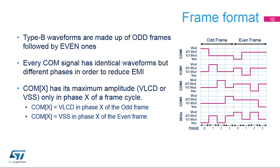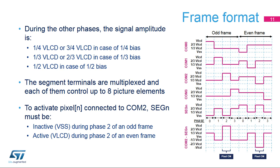The LCD controller generates a type B frame format which maintains 0 volts DC over the two odd and even frames. All COM signals have identical waveforms but a different phase in order to reduce electromagnetic interference. COM X has its maximum amplitude only during phase X of a frame — that is to say, VLCD during odd frames and VSS during even frames. During the other phases, the signal amplitude is 1/4 VLCD or 3/4 VLCD if a 1/4 bias is selected, 1/3 VLCD or 2/3 VLCD if a 1/3 bias is selected, and 1/2 if a 1/2 bias is selected. Each segment terminal is multiplexed, meaning that each one may control up to 8 picture elements depending on the chosen duty rate. For a duty rate of 1/4, a single segment terminal is associated with 4 common terminals, thus allowing the control of 4 picture elements.